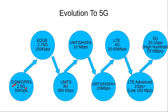Then we shifted from 2G to 3G technology, where the user experienced a data rate of 384 kbps. Then 3G evolved into 3G HSPA with a user data rate of 10 Mbps, which then evolved into 3G UMTS HSPA+ with a data rate of 20 Mbps.